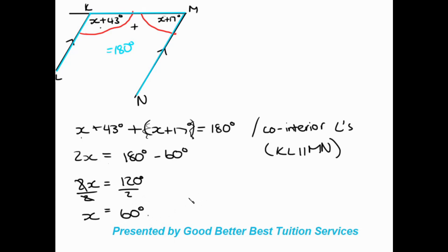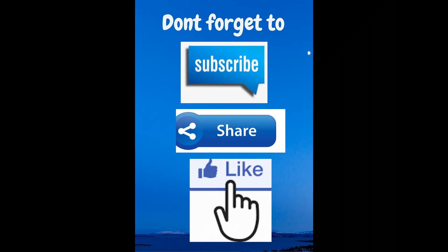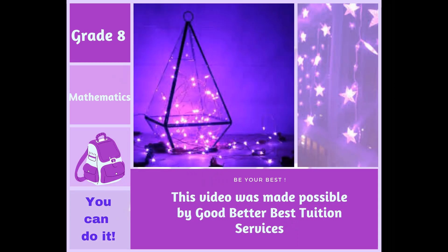A very important thing to note about today's lesson: don't stress if you see two variable angles. Just follow your rules and you'll get to a point where you can solve for x. It might take a bit longer, but you will get to your answer. Just remember to apply the rule and write it as you say it. Thank you very much for joining us — that is the end of the recording for today.